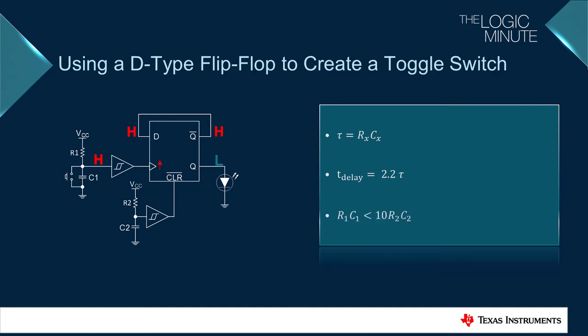Note that the time constant for the power on reset circuit should be longer than the input time constant. Since the Schmidt trigger buffer's output is connected to the clock input, the button press triggers the flip-flop, causing the high at the data input to latch to the output and the system turns on. When the switch is pressed again, the flip-flop toggles the output and the system turns off.